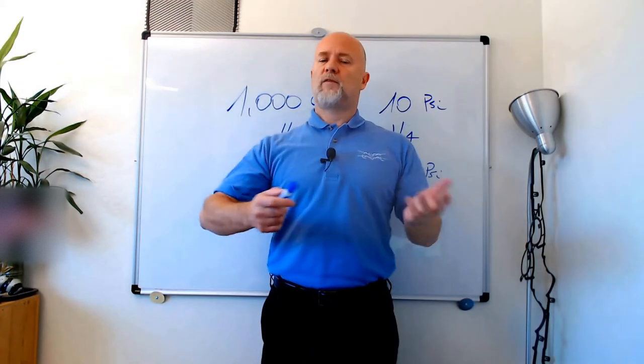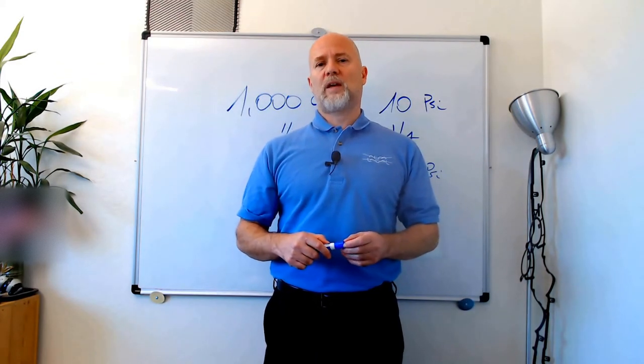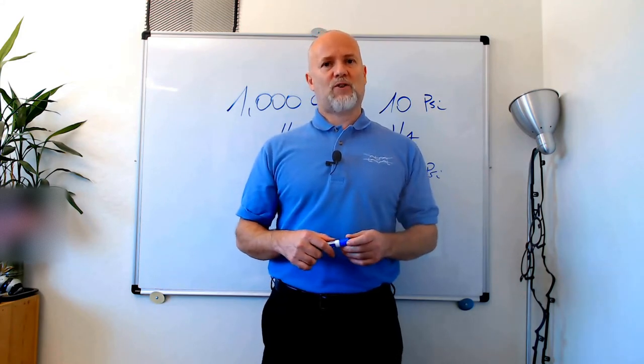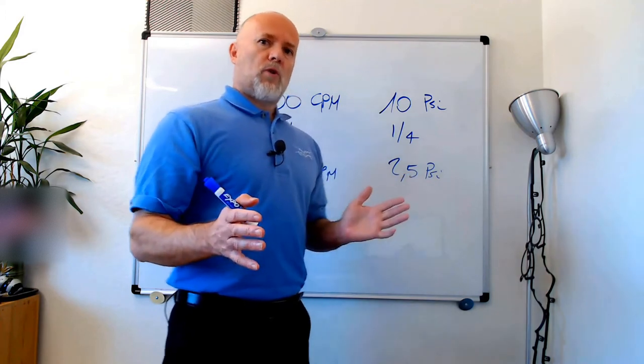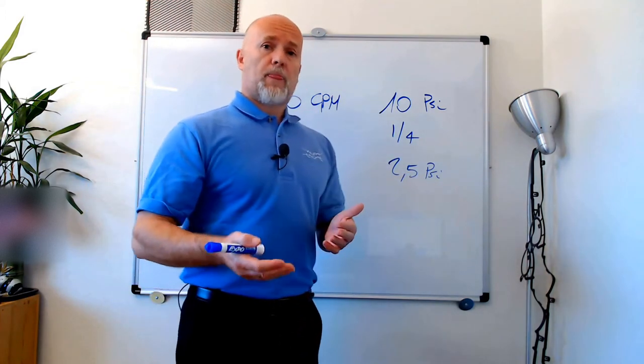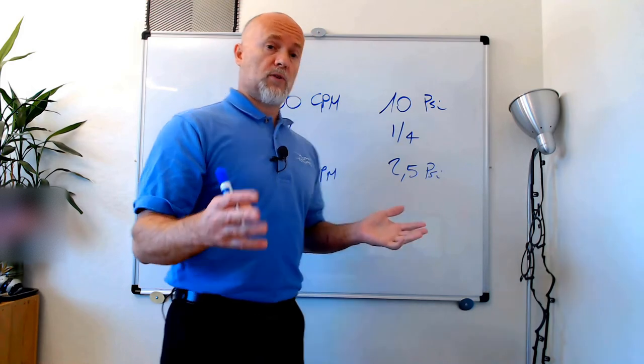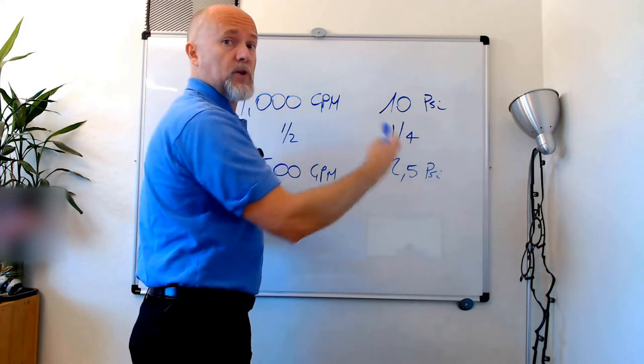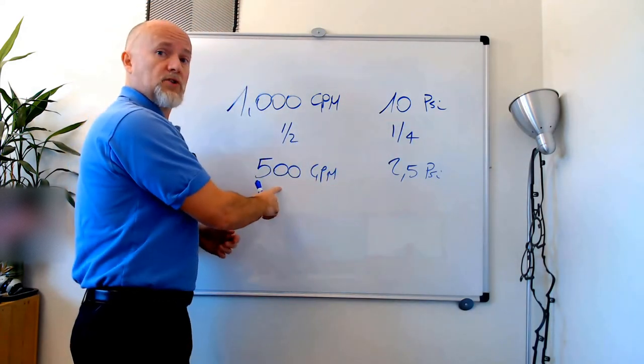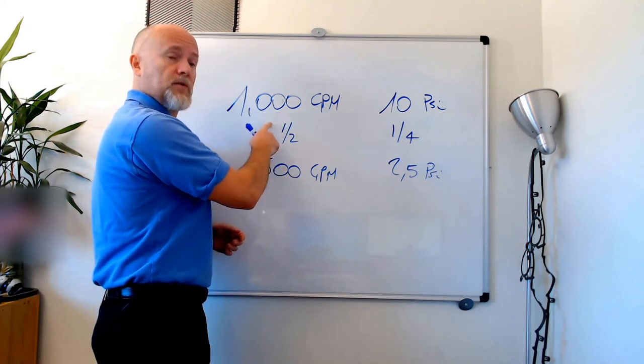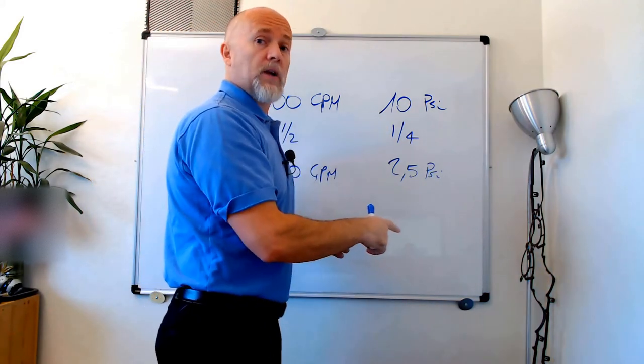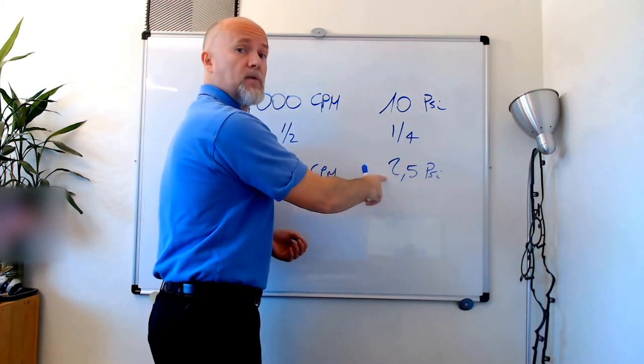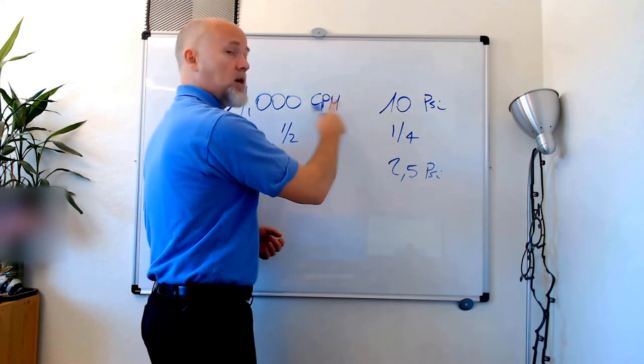It would be impossible to make a video about pressure drop without talking about shear stress and the consequence of partial load in a heat exchanger. You have to remember that the pressure drop decreases with the square of the decrease of the throughput. So if you design a heat exchanger for 1,000 gallons per minute with 10 psi pressure drop design, but then you run the heat exchanger at 500 gallons per minute (half of the design throughput), the pressure drop is not going to be 5 psi (half), but it's going to be 2.5 psi because it's one quarter, the square of the difference.